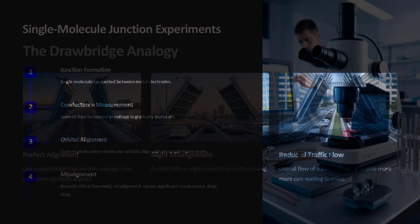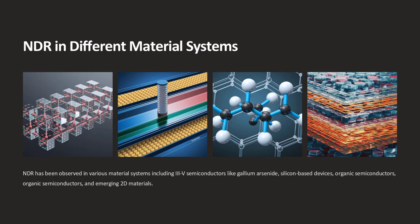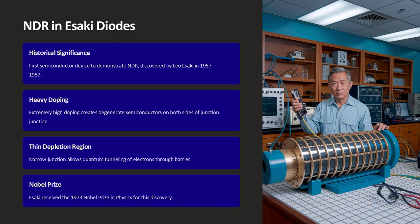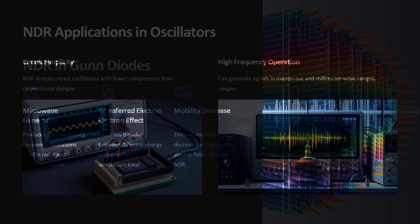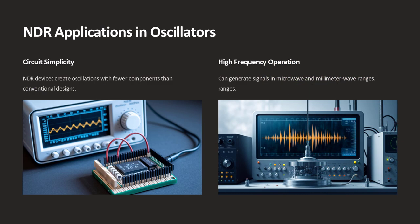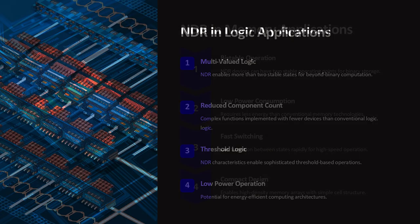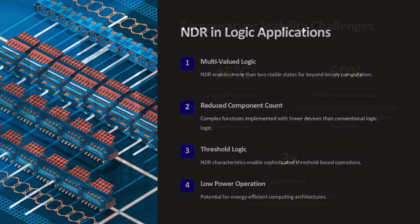Researchers study these devices to understand the underlying quantum mechanics and to develop components that can be used in high-speed and high-frequency applications. In experimental research, scientists carefully measure the IV characteristics of these devices. They plot voltage against current and look for the N-shaped curve that signifies the presence of NDR — the region where the differential resistance, the rate at which the current changes with voltage, becomes negative. Such measurements not only confirm theoretical predictions but also help in refining the design of electronic circuits.